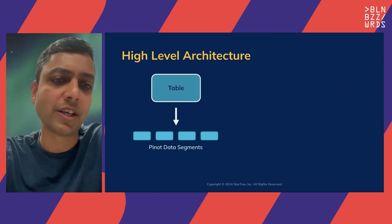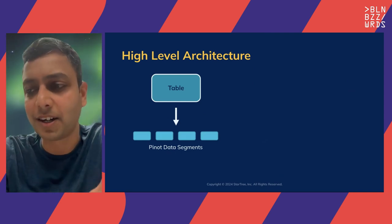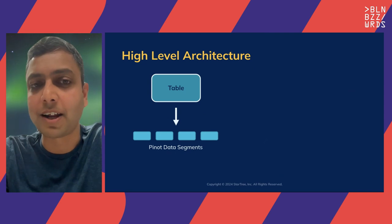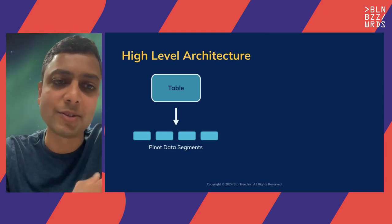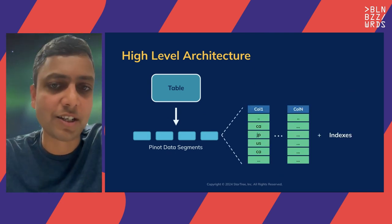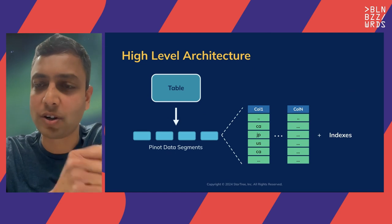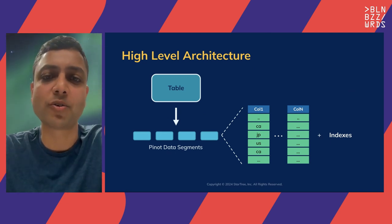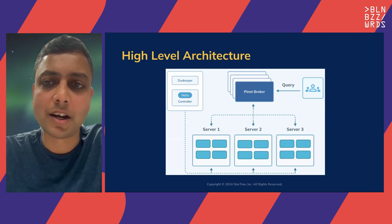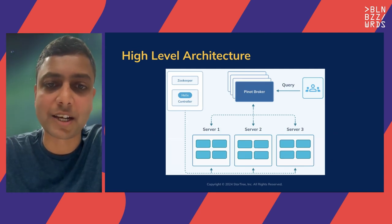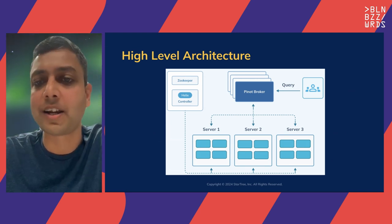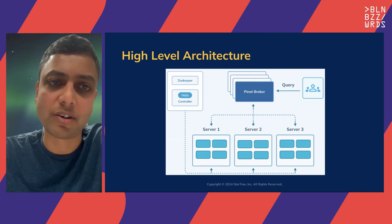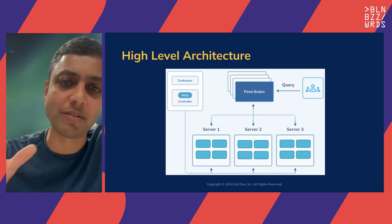Let me also touch on the high-level architecture, which will help in understanding why Pinot solves a lot of the problems we've seen. It's an analytical database and a table within Pinot is broken up into what we call segments. Each segment consists of data laid out in a columnar fashion — instead of a row-oriented format, you have a column format — along with any indexes configured on those columns. It's a distributed system where segments are distributed across various data nodes or Pinot servers. We have a Pinot broker for query processing and a Pinot controller for cluster operations.